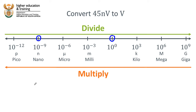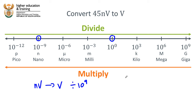When moving from nanovolts to volts, what is the difference in the exponent? We go from negative nine to zero, so the difference in the exponent is 10 to the power of nine. The difference in the power is from 10 to the negative nine all the way up to zero, which is 10 to the nine. And we know that because we are moving from left to right, we need to divide the number by that distance on the number line. So 45 nanovolts divided by 10 to the power nine will give us our answer.